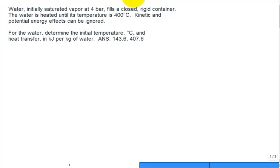All right, so let's solve this problem. We have water. It's initially saturated vapor. Very important. At a given pressure, 4 bar. It fills a closed, rigid, that's a key word, container. So the volume of that container is not going to change. And it's closed, meaning there's no inflow or outflow of that container. The amount of water is trapped and stays constant in that constant volume container. The water is heated until its temperature reaches 400 degrees C.